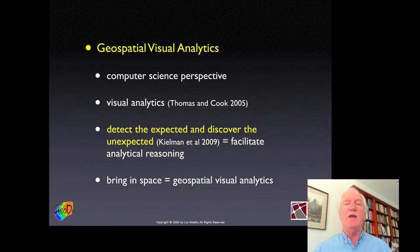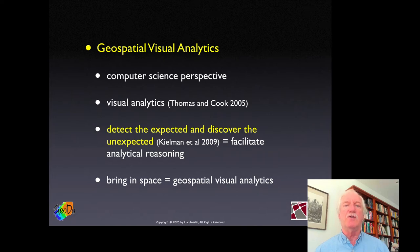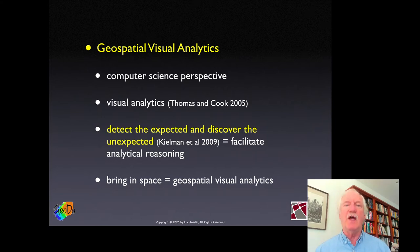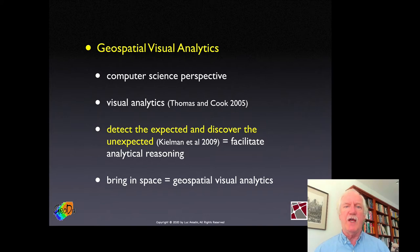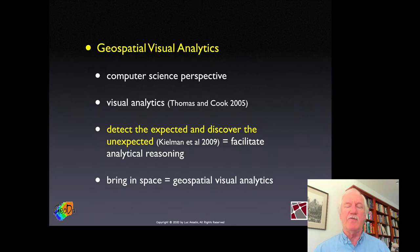Visual analytics actually came largely out of 9/11, where a lot of investment was made by the Department of Homeland Security to analyze data visually and very efficiently. The human brain is actually very good at picking out patterns — sometimes the wrong patterns, but it's very efficient. These techniques of visual analytics were designed to facilitate that, and then some geographers brought in spatial concerns, which is called geospatial visual analytics.